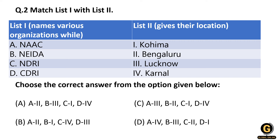NAAC, National Assessment and Accreditation Council, is based in Bengaluru, so option A matches with option 2 — Bengaluru. If you know one answer, your probability of getting the correct answer is 50%. If you also know NDRI — National Dairy Research Institute — is based in Karnal, Haryana, matching C with 4, then with A-2 and C-4 you are left with only option B, making you 100% sure. B is the Northeast Initiative Development Agency based in Kohima, and CDRI — Central Drug Research Institute, a CSIR institute — is based in Lucknow, Uttar Pradesh. The correct answer is B.